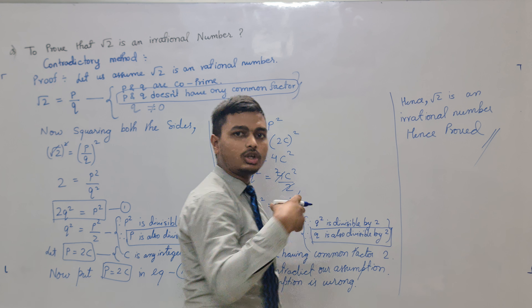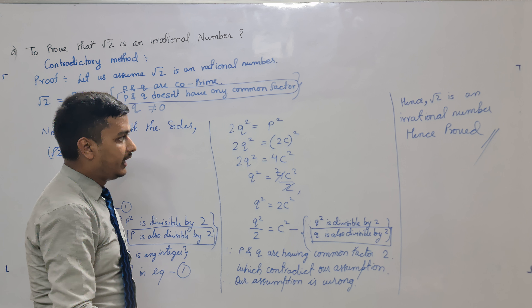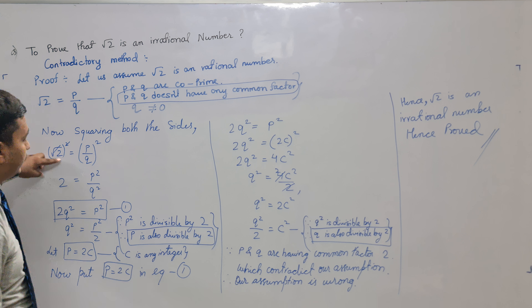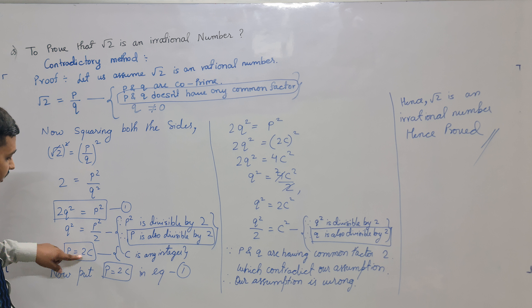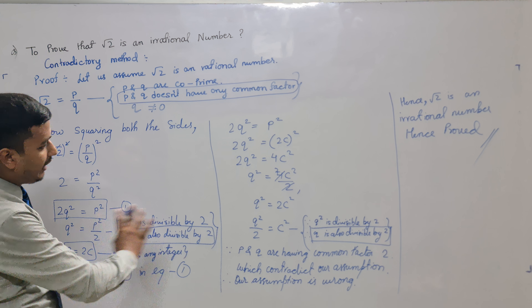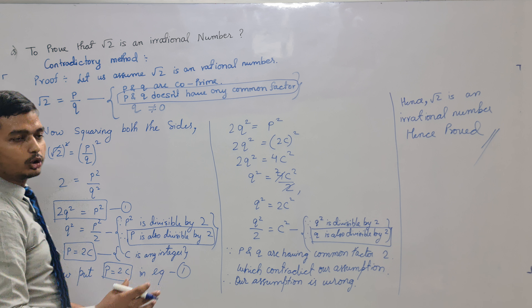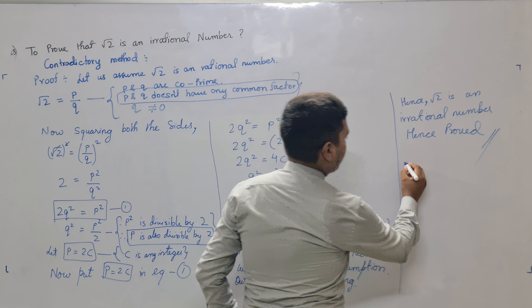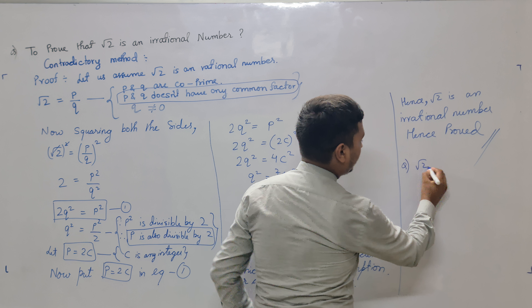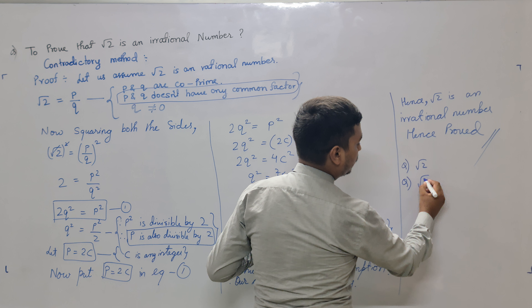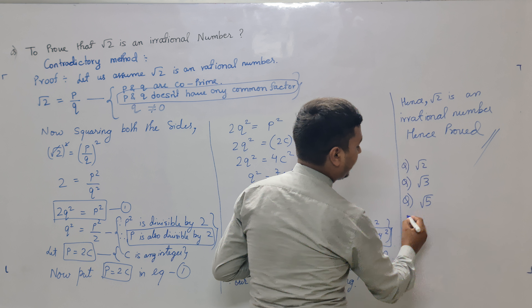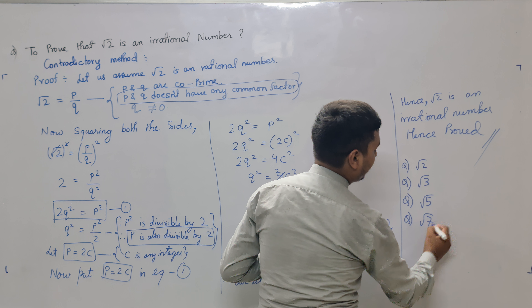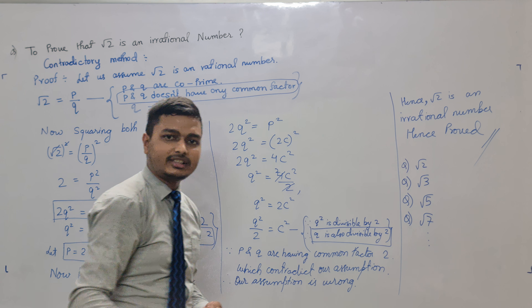Using the same method, we can solve different types of problems. In place of 2, if it is 3, then we replace 2 with 3 throughout. On the same pattern, we can prove root 2, root 3, root 5, root 7, and so on — the process remains the same.